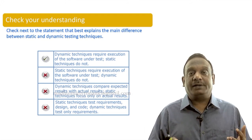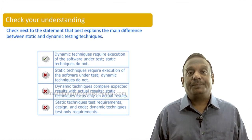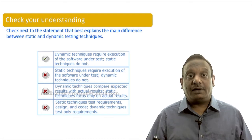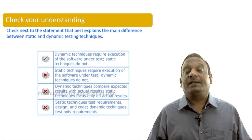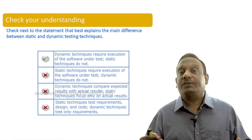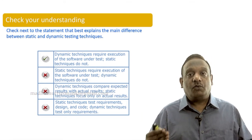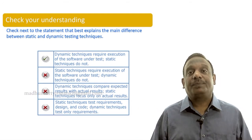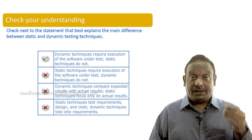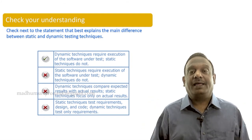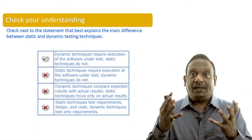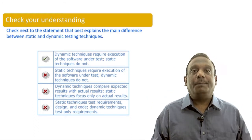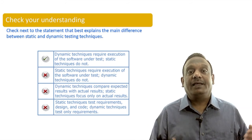Both statements are right in answer A. The second statement is totally wrong. The third one states dynamic techniques compare expected results with actual results, but static techniques also focus on comparison — any testing, whether static or dynamic, is a comparison activity: comparing what was actually built into the software with what should have been built. That is why answer A is right.